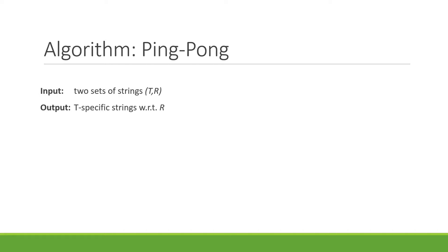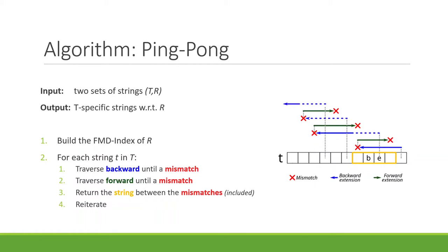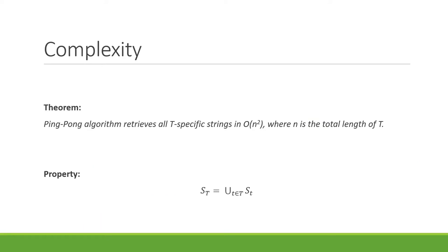We are now ready to describe the algorithm that we call ping-pong. The input is two sets of strings t and r, and the output is the set of t-specific strings with respect to r. In the first step we build the FMD index of sample r, then we consider each string independently. Starting from the last base of the string, we traverse backward the index until we find a mismatch, then starting from the mismatch we traverse forward the index until we find another mismatch, and we return the string between the two mismatches included. We then reiterate starting from the position before the second mismatch found. This algorithm has a complexity that is quadratic in the total length of the input strings in t, based on the property that t-specific strings computed on set T equals the union of t-specific strings computed on each string in the set.